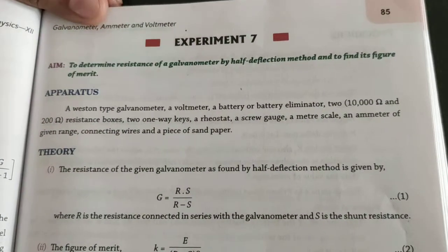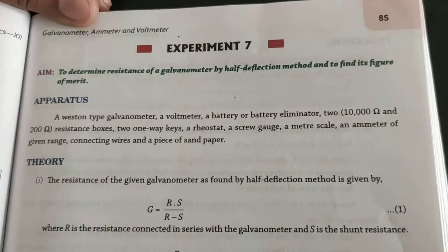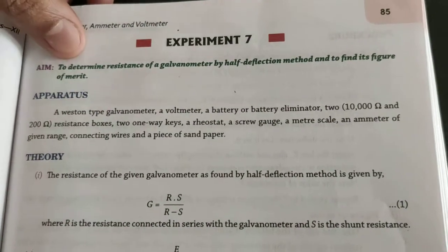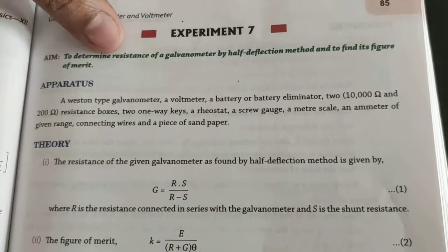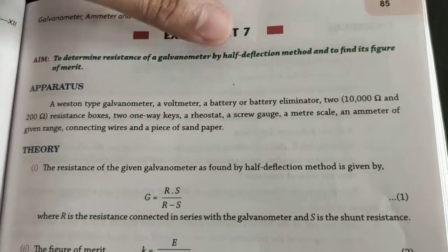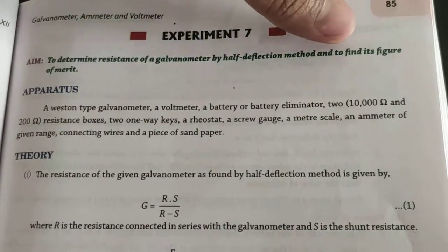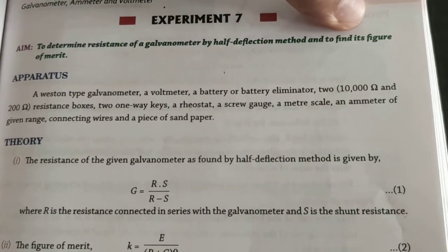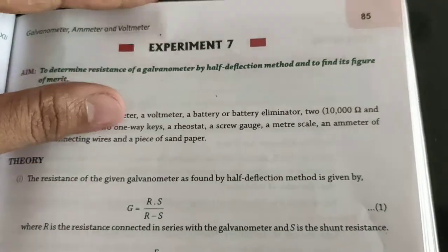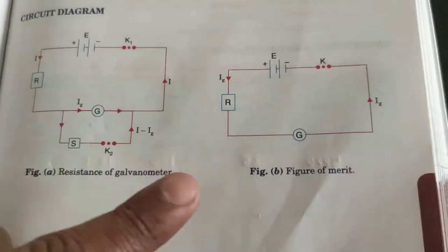Hello students, now we are learning the second part of this same experiment. In the first part, we discussed how to determine the resistance of galvanometer by half deflection method. Now we are learning the second part - to find the figure of merit. This part is very easy.